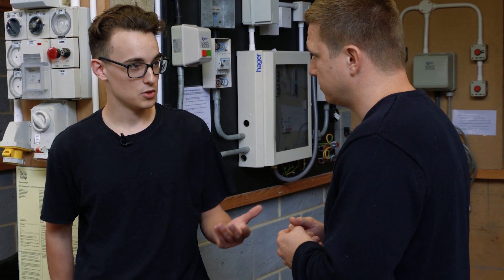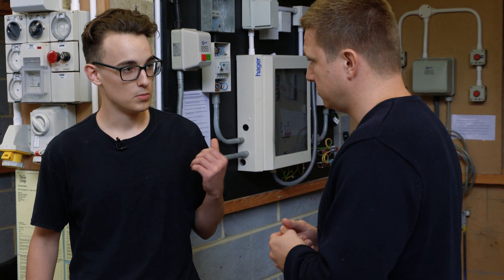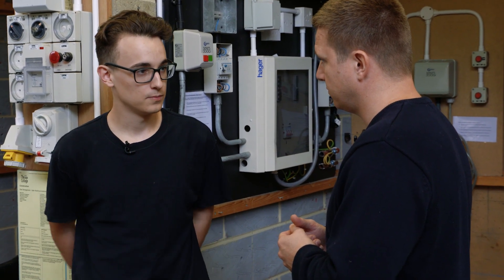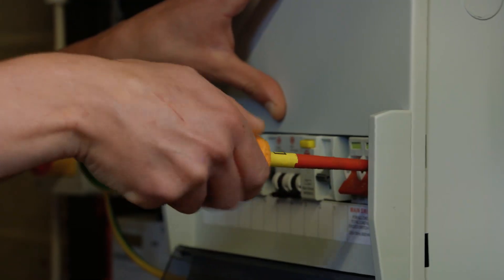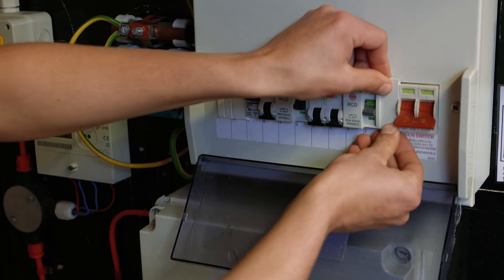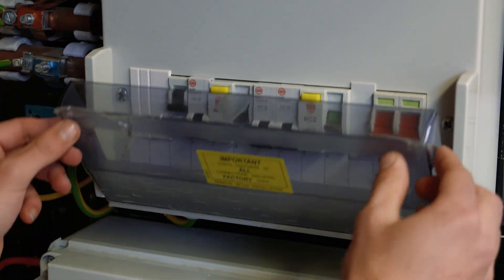Yep. By removing the damaged piece of cable and installing a new piece of cable, rectifies the fault. With that in place, you have everything connected again. You've terminated your socket outlets and the consumer unit. So are we in a position where we can energise the circuit now? Not just yet.